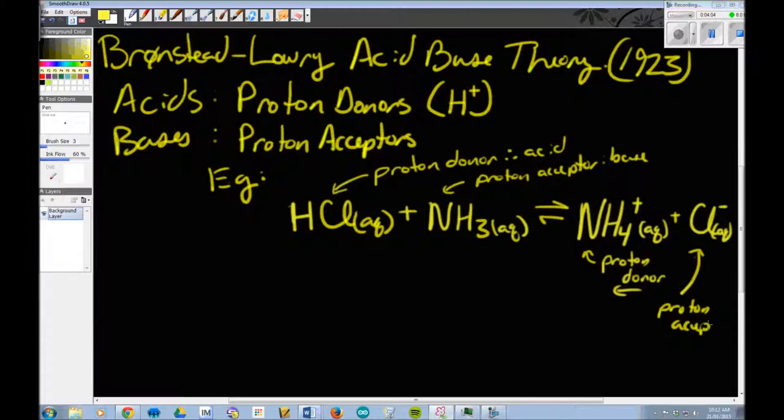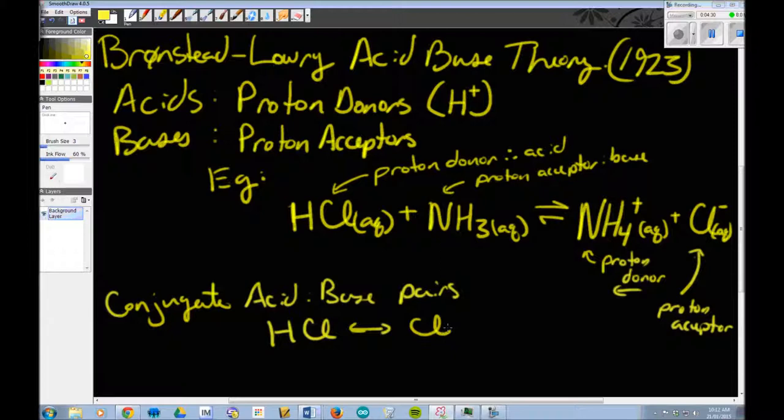This leads to the next thing, and this is conjugate acid-base pairs. What we have here is HCl and Cl- as one conjugate acid-base pair. This is an acid, this is now a base because in the reverse reaction it can accept back its proton, so it oscillates between the two. Here we have a base and its conjugate acid.